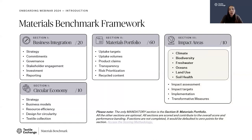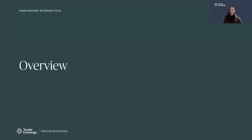The Materials Benchmark framework is divided into four different sections: business integration, circular economy, the materials portfolio, and impact areas. It's important to note that only the materials portfolio is mandatory to complete. Our framework is based on a scoring methodology — each section has a maximum number of points that contribute to the overall score. We will do a deep dive into each section and the scoring methodology later in the presentation.